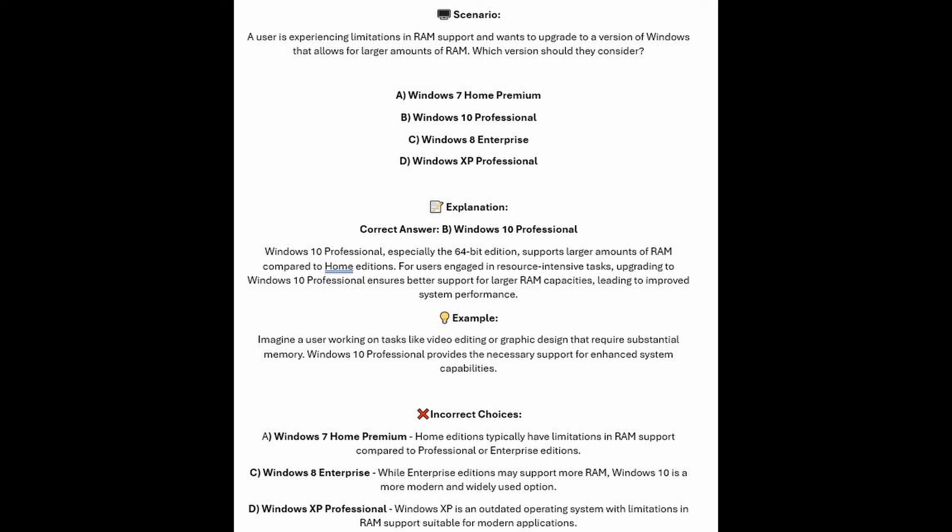And now for the incorrect answers. Windows 7 Home Premium — home editions typically have limitations in RAM support compared to Professional or Enterprise editions. Windows 8 Enterprise — whilst Enterprise editions may support more RAM, Windows 10 is a more modern and widely used option. And Windows XP Professional is an outdated operating system with limitations in RAM support, unsuitable for modern applications.